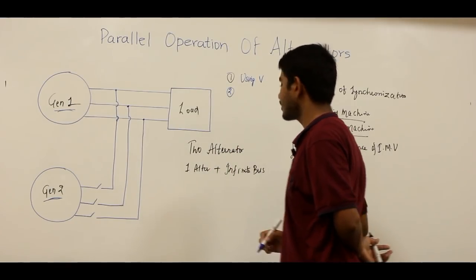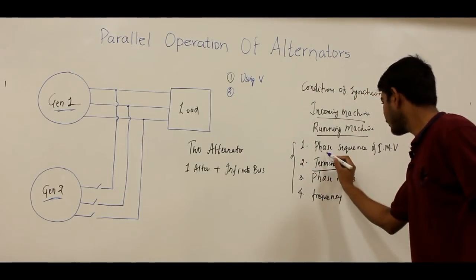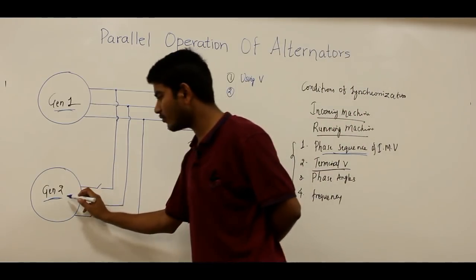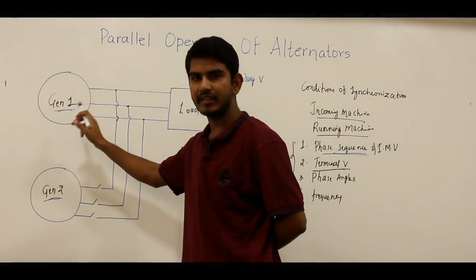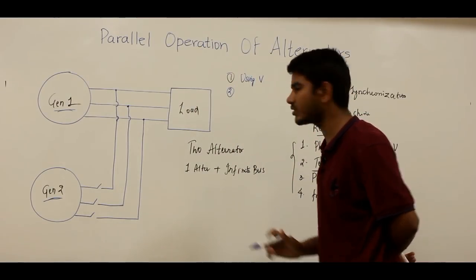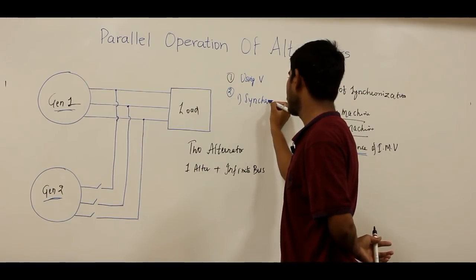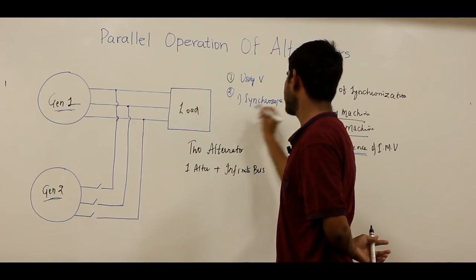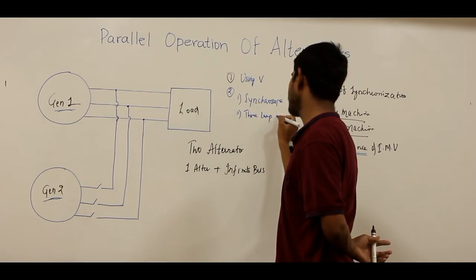The second thing to check and verify is the phase sequence. The phase sequence of the incoming machine voltage should be equal to that of the running machine. There are two methods to check phase sequence: the first is by using a synchroscope, and the second is the three lamp method.